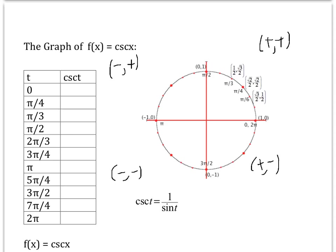Here comes the graph of cosecant of x. Remember, it's the reciprocal of the sine — the reciprocal of the y-coordinate as you move around the unit circle. The cosecant is undefined wherever the y-coordinate is zero, so it's undefined at zero, at pi, and at two pi.